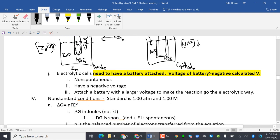Electrolytic cells. You need to have a battery attached. The voltage of the battery must be greater than the negative calculated voltage. So that means as long as it's bigger, it'll work. It doesn't have anything to do with speed, just bigger voltage. So an electrolytic cell is non-spontaneous with a negative voltage. You attach a battery with a larger voltage to make the reaction go the electrolytic way.